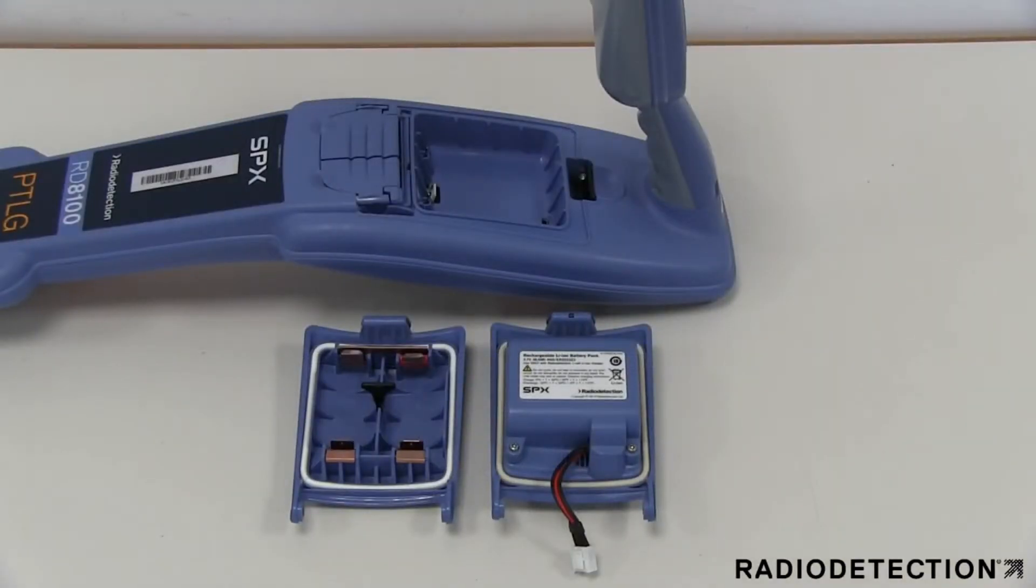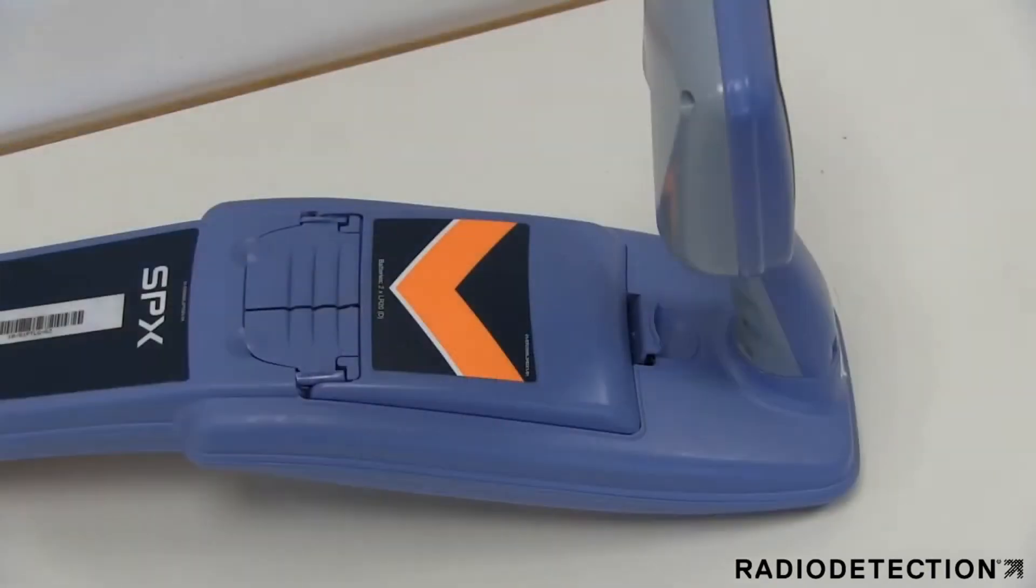The locator can be powered by two D cell alkaline or nickel metal hydride batteries, or a rechargeable battery pack.